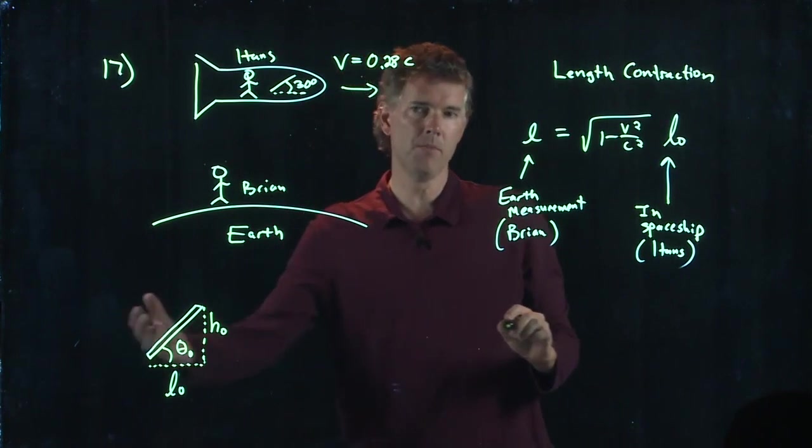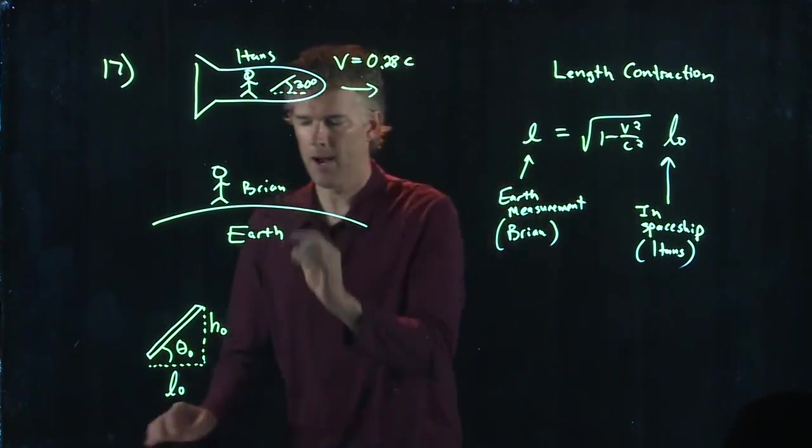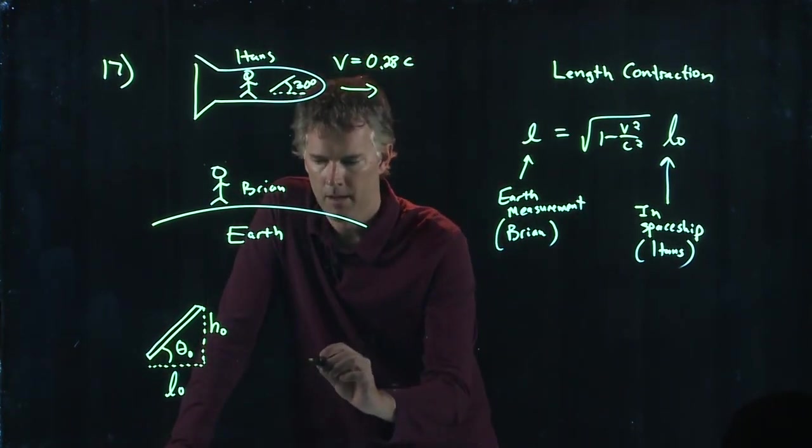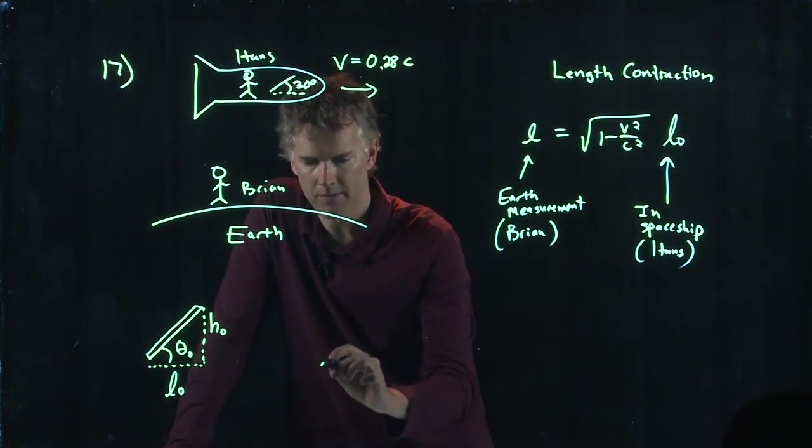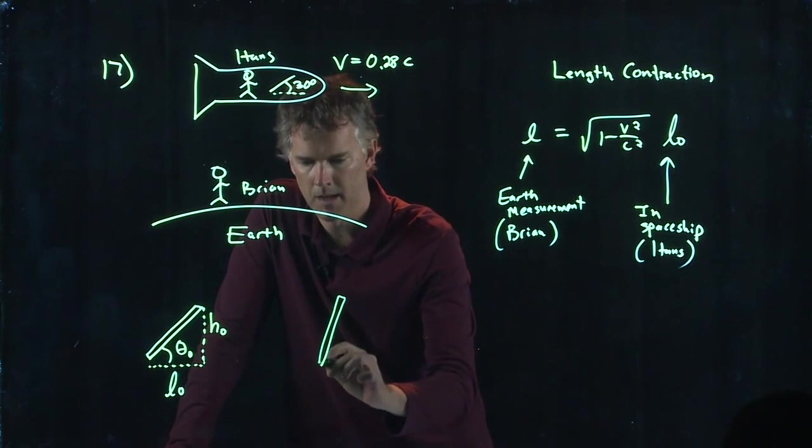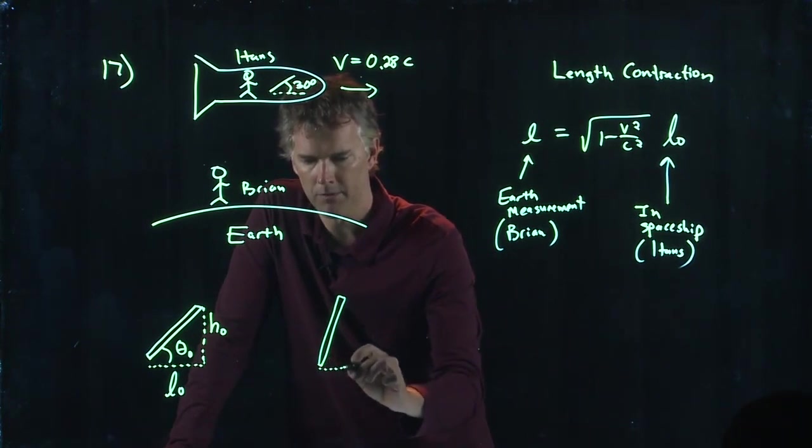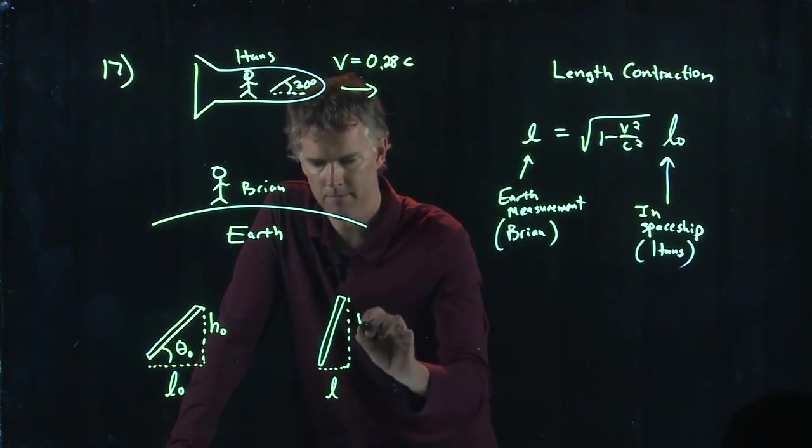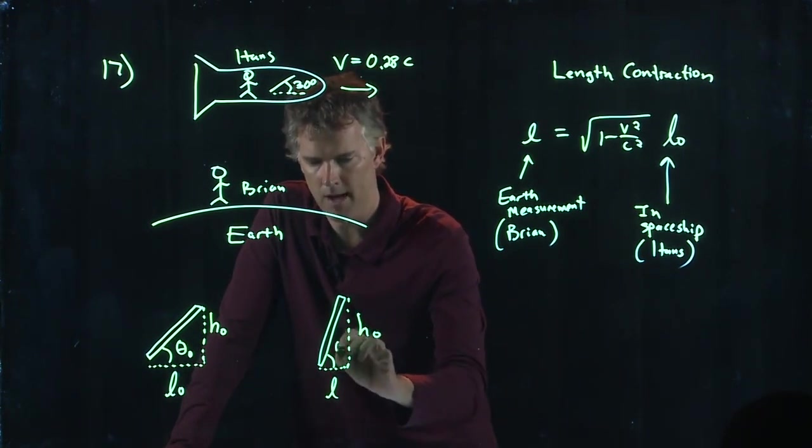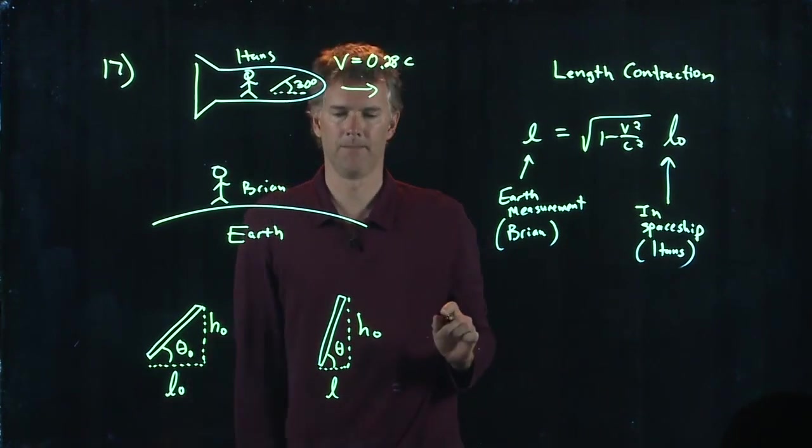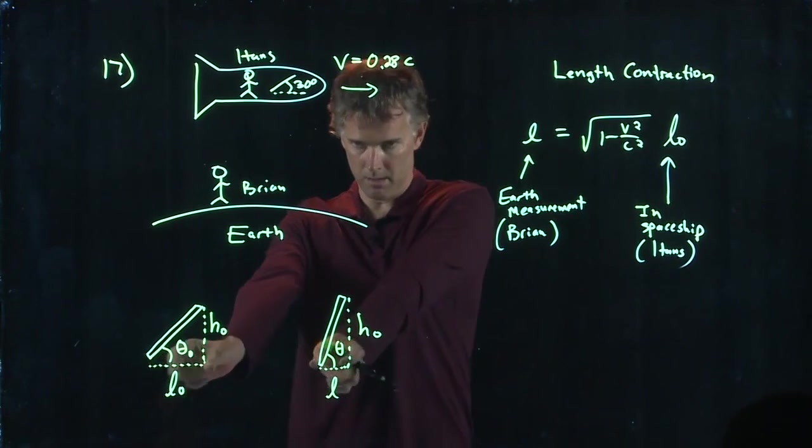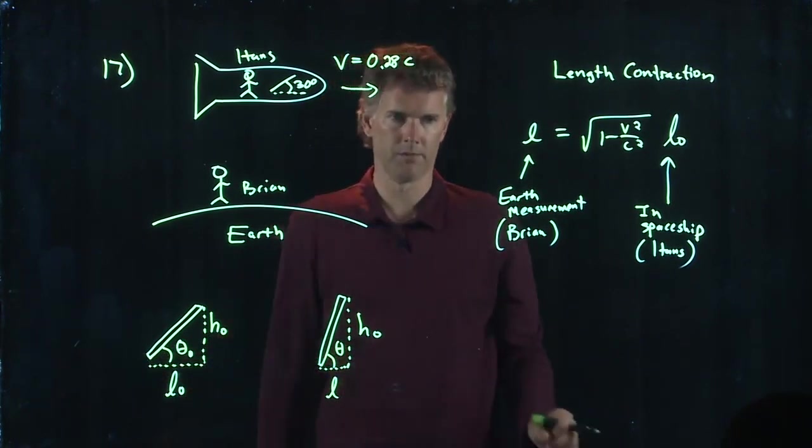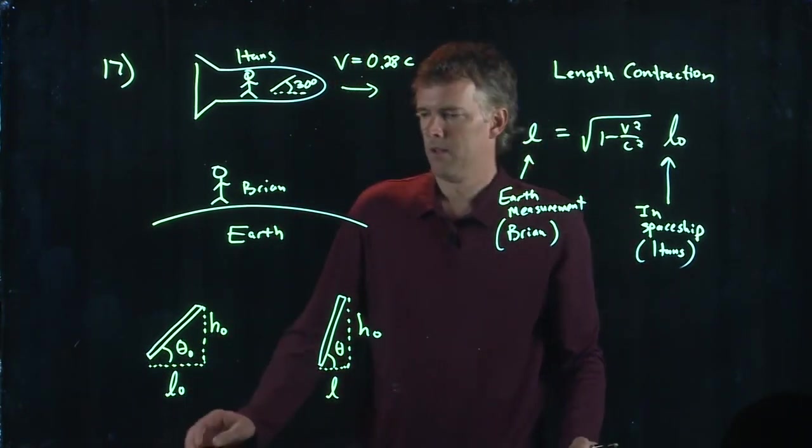But when it starts moving and Brian takes a measurement of it, L-naught shrinks. H-naught stays exactly the same. And so in fact, the pencil looks like it is more upright. And let's call that angle theta. H-naught stays the same, but the L shrinks.